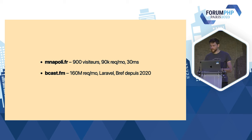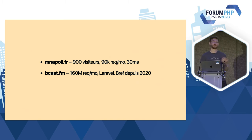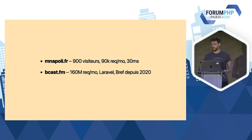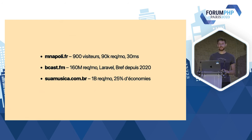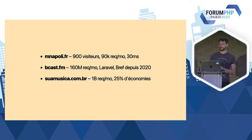Un autre exemple : bcast.fm, c'est un site en Laravel qui tourne sur Bref depuis 2020. Eux, ils font 160 millions de requêtes chaque mois et ça marche très bien, ils en sont très contents. Autre exemple avec encore plus de trafic : Musica, c'est un peu l'iTunes brésilien, énormément de trafic — un milliard de requêtes chaque mois. Eux, ils ont fait une migration de ECS et des conteneurs sur EC2 vers Lambda, et ils ont fait 25% d'économies sur l'infrastructure, sans même compter le temps humain de maintenance. Même dans ces cas-là, à très gros trafic, ils ont fait des économies sur les coûts d'hébergement.